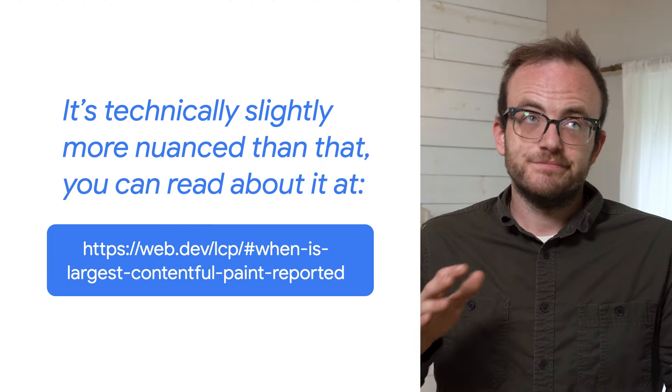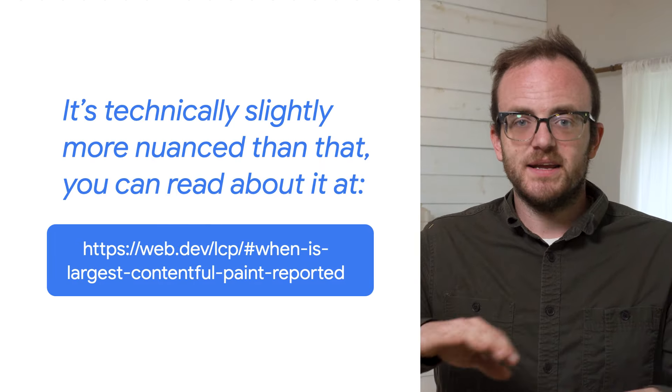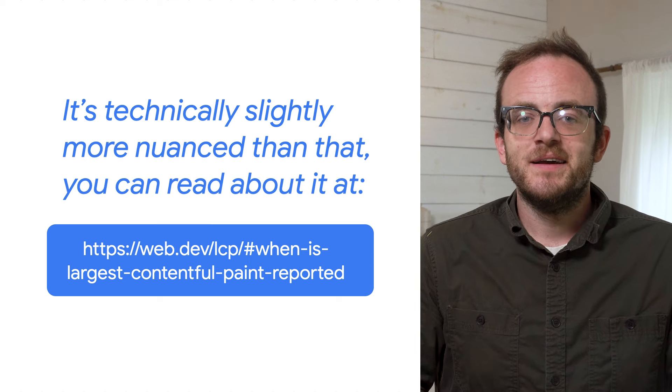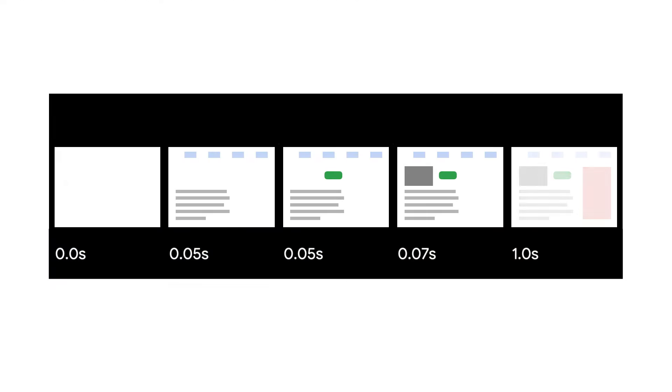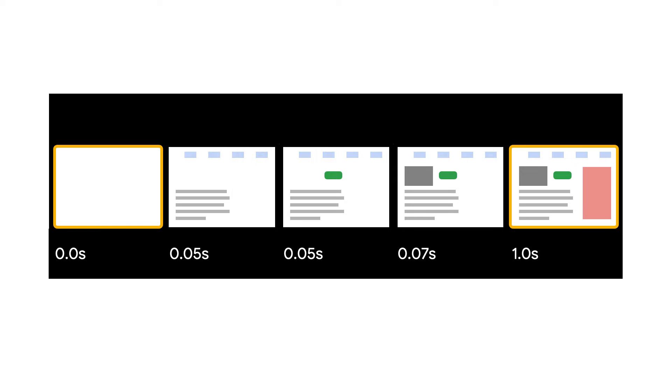So what is the largest contentful paint? That's when the element that uses the most number of pixels of all the elements on our user's screen is painted. When we measure LCP, we do so in seconds. It's the number of seconds between the very first byte that the page loads and the final largest contentful paint event.